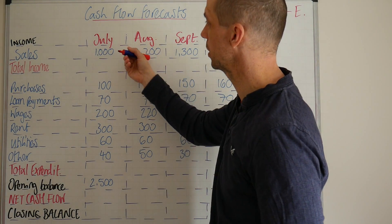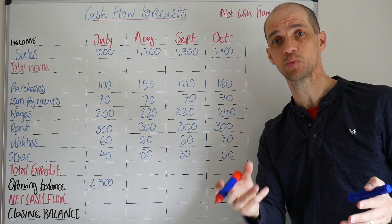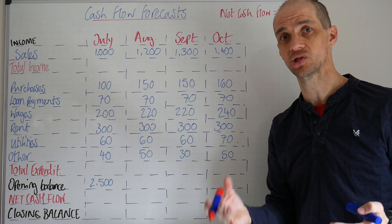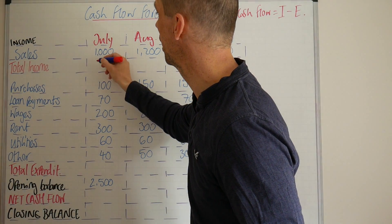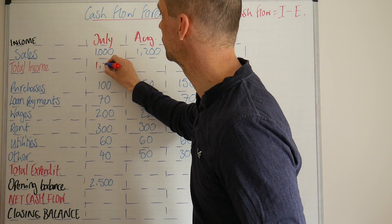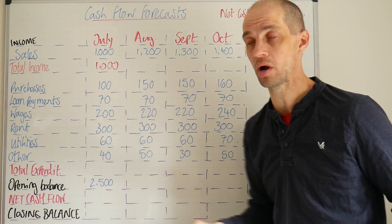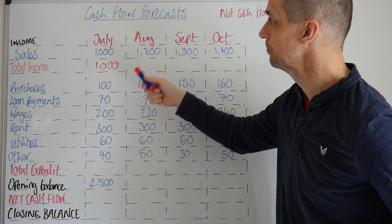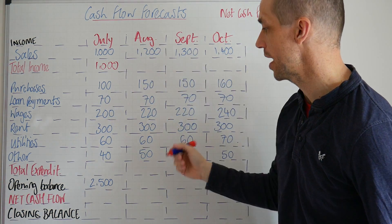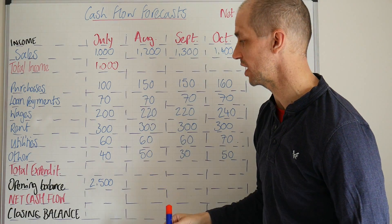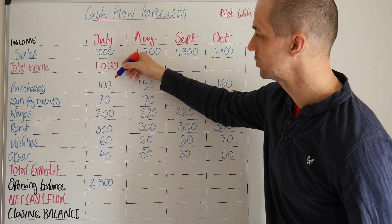Let's run through how we can calculate one of these. If you're watching this again, it's probably worthwhile trying to fill out these numbers on your own first. We've got 1000 pounds as our total sales.